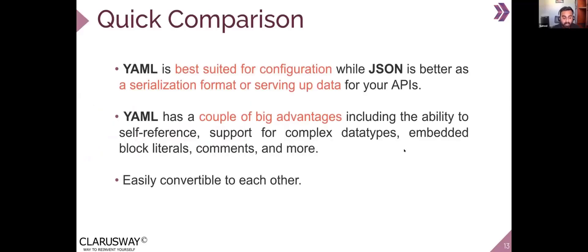YAML is best suited for configuration — as mentioned, YAML is the one suited for configuration while JSON is a better serialization format for serving data for APIs. If you remember, we can have configurations returned in YAML very easily, and it is very human-friendly and readable. JSON is for serialization, serving up data for your APIs — once data is generated it can be sent back to the server, processed, and sent to the database.